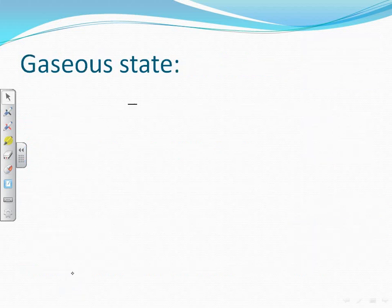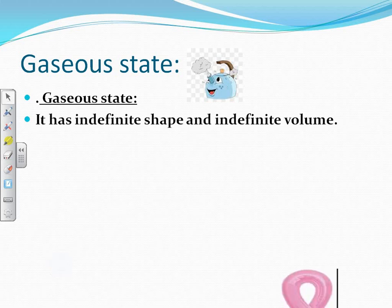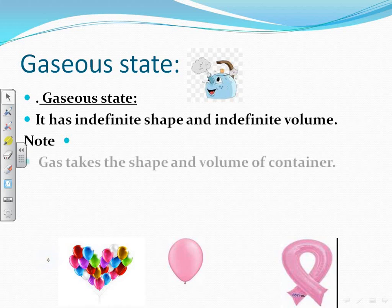Gaseous state has an indefinite shape and indefinite volume. Examples include water vapor and air. If we blow a balloon of different shapes and sizes, the air takes the shape and size of the balloon. So the gaseous state has indefinite shape and indefinite volume — gas takes the shape and volume of its container.